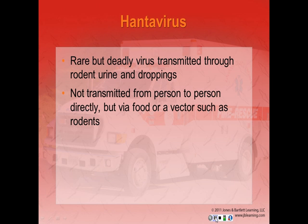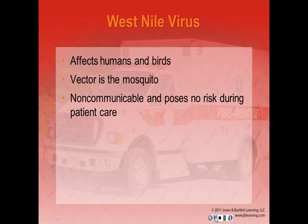New and emerging diseases. Hantavirus is rare but deadly and is transmitted through rodent urine and droppings. It is not transmitted from person to person directly, but via food or a vector such as rodents. West Nile virus: the vector is the mosquito. It affects humans and birds. These diseases are not communicable and pose no risk during patient care.